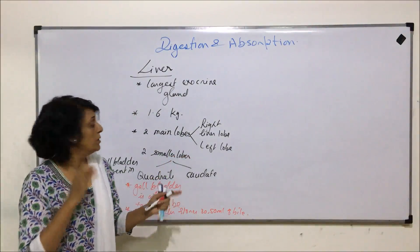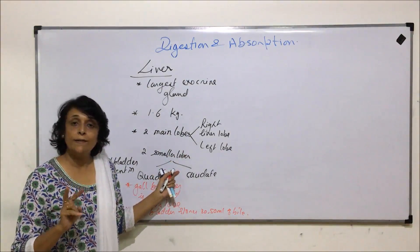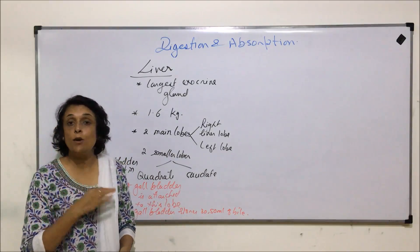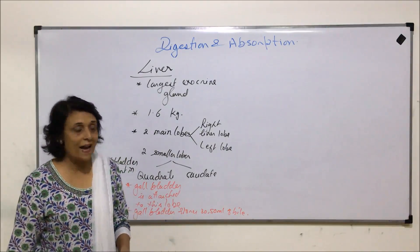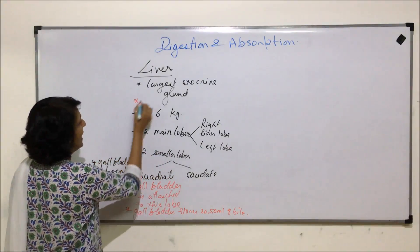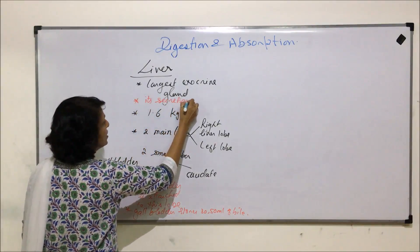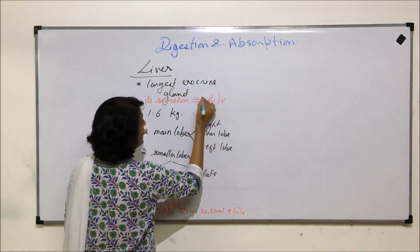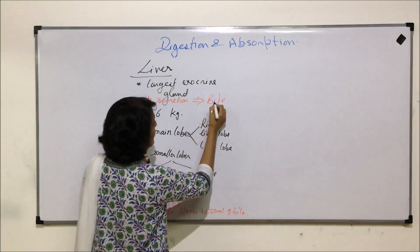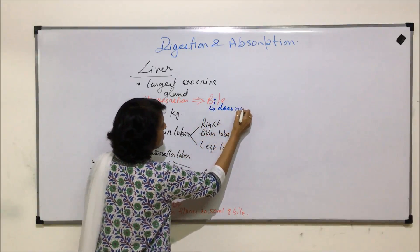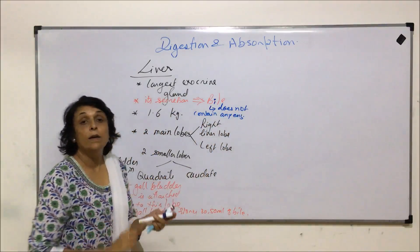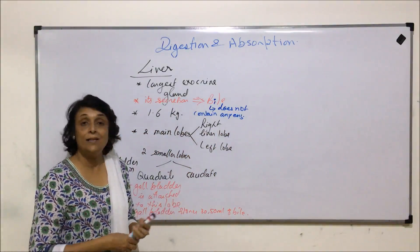From the outside, the liver has two main lobes — right and left — and two smaller lobes. Its position is slightly on the right-hand side, just beneath the diaphragm. The secretion of liver is known as bile, and bile does not contain any enzyme.